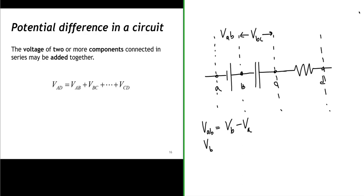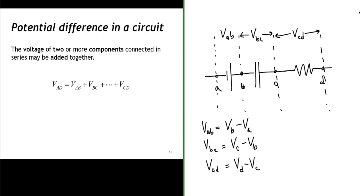The potential difference of the capacitor is the potential difference from B to C — that is, the difference in potential between the potential at point C and the potential at point B. And then the potential difference of the resistor, V sub CD, is the potential difference from point C to D, which is the potential at point D minus the potential at point C.